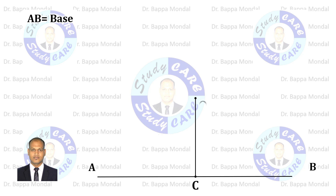Now take double of OC and extend up to D, then draw a triangle ADB, where AD equals BD.